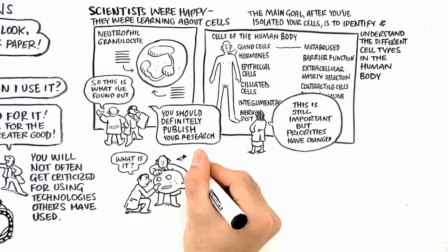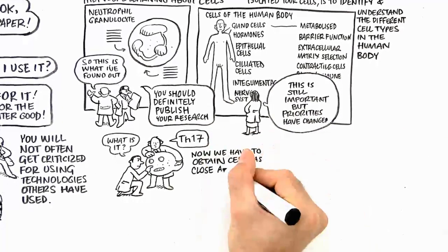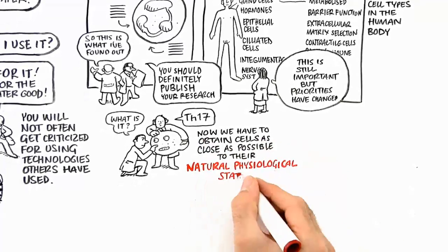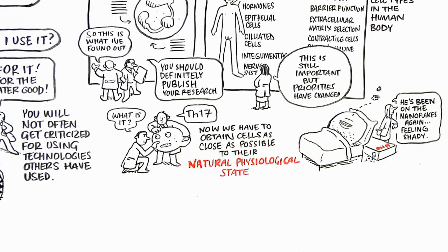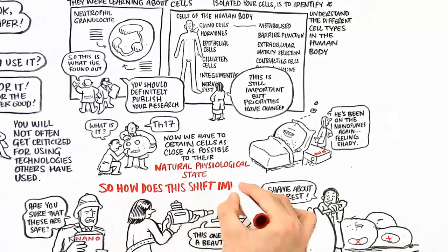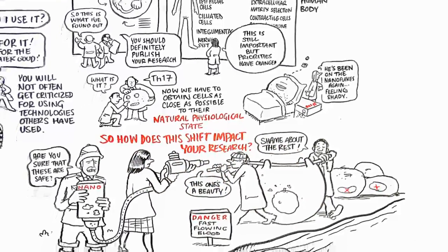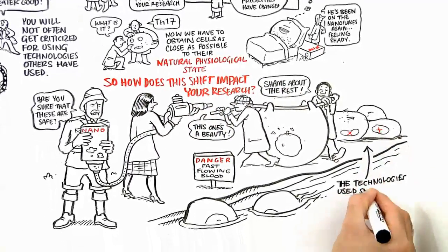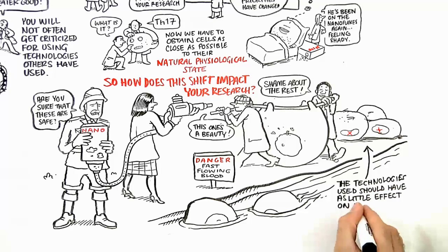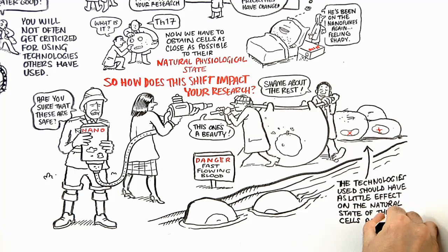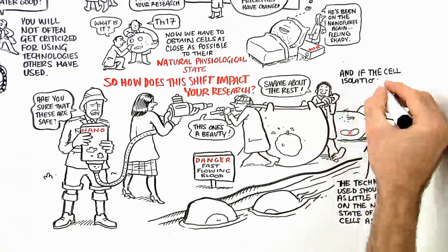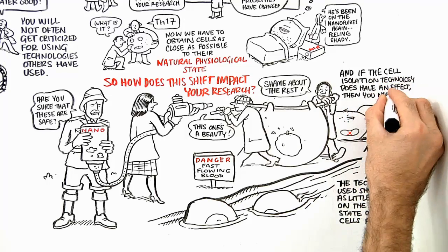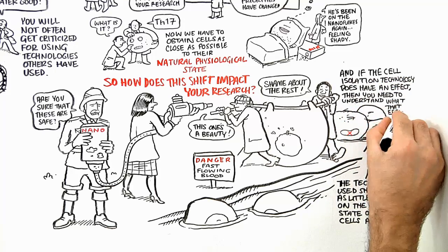Now, we want to obtain cells as close as possible to their natural, physiological state. So how does this shift impact your research? The technologies you use should have as little effect on the natural state of the cells as possible. And if the cell isolation technology does have an effect, then you need to understand what that effect is.